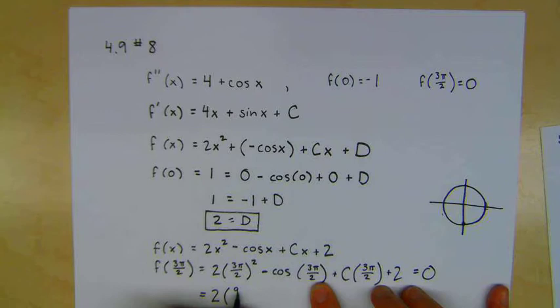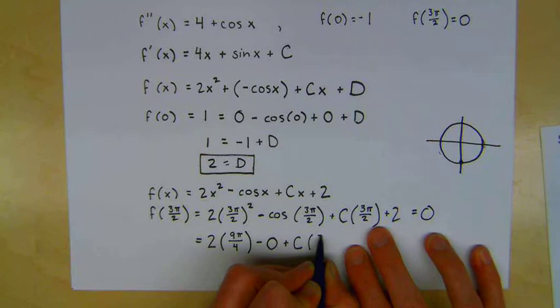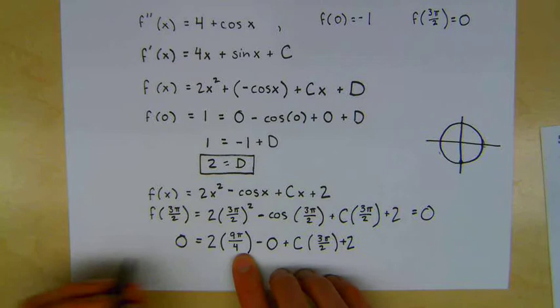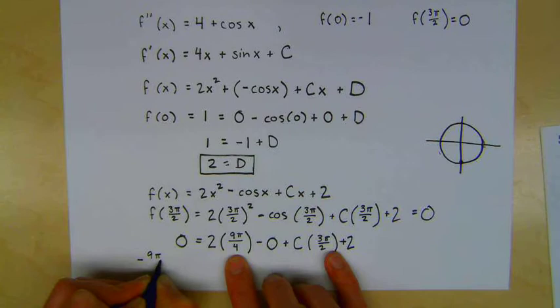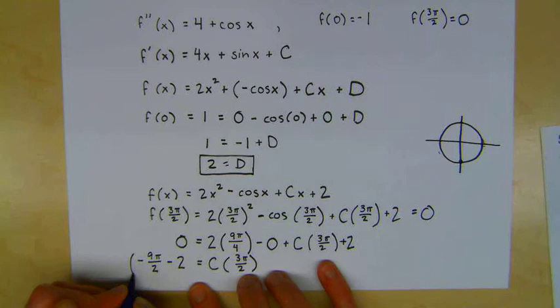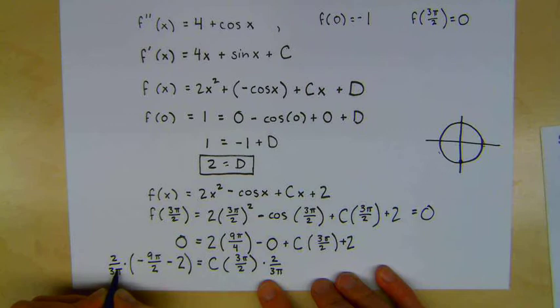This is going to be 2 times 9π/4 minus 0 plus c times 3π/2 plus 2. That's all equal to 0. So the 2 cancels one of the 2s in the denominator here. And I'm going to subtract both of these chunks to the other side. So this becomes negative 9π/2. This becomes negative 2 is equal to c times 3π/2. And now I'm going to multiply both sides by the reciprocal. So this is times 2 over 3π times 2 over 3π. And look, there's my answer for c.